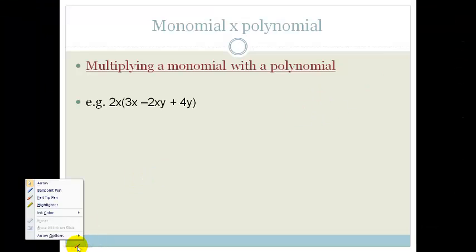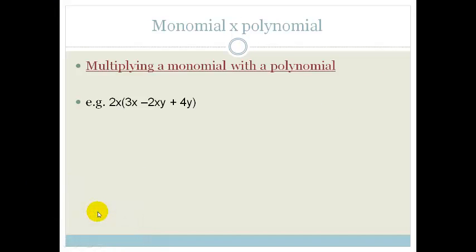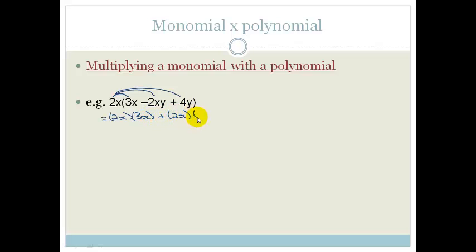Now let's see if we can do an example together. This looks a little different because there are some y's here as well, but the principle is exactly the same. We're going to take 2x and multiply it with each of the variables in the expression: 2x times 3x, plus 2x times minus 2xy, plus 2x times 4y.